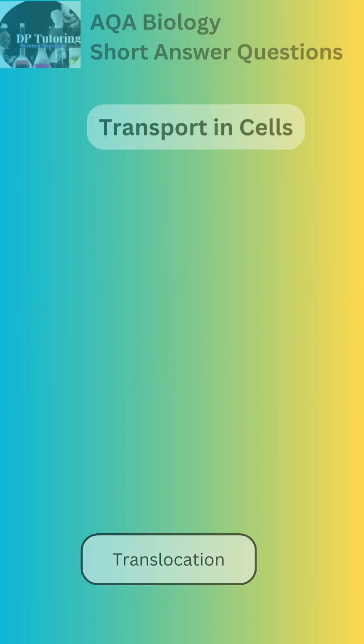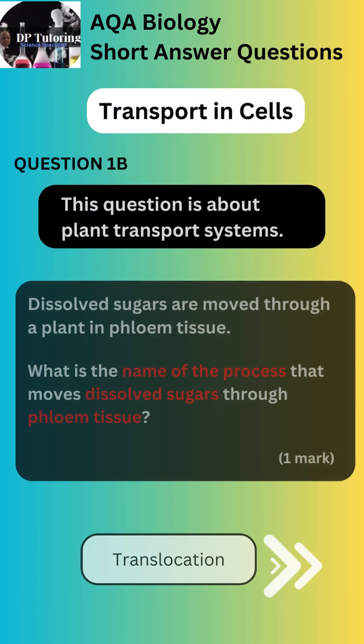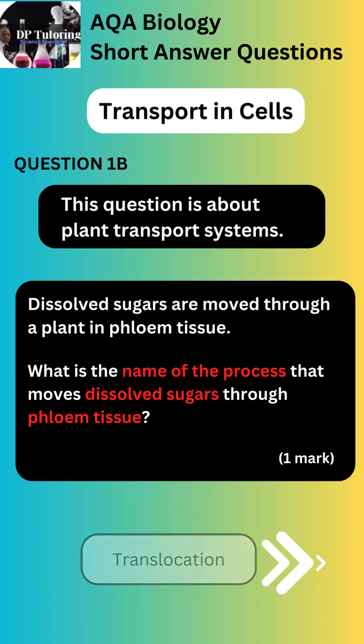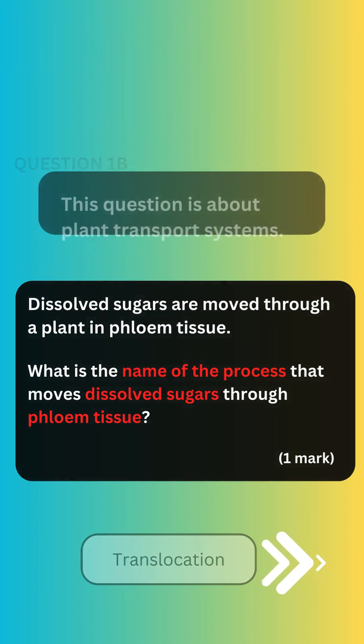Part B of the question values 1 mark and asks for the name of the process that moves dissolved sugars through the phloem tissue. The answer is translocation.